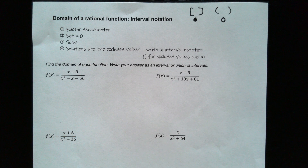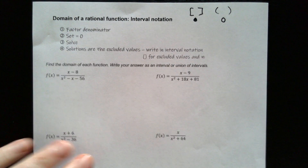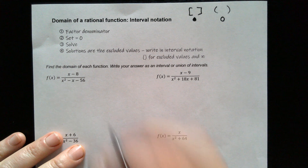Let's take a look at the first one. It says: factor the denominator, set it equal to zero, and solve. The solutions are the excluded values.